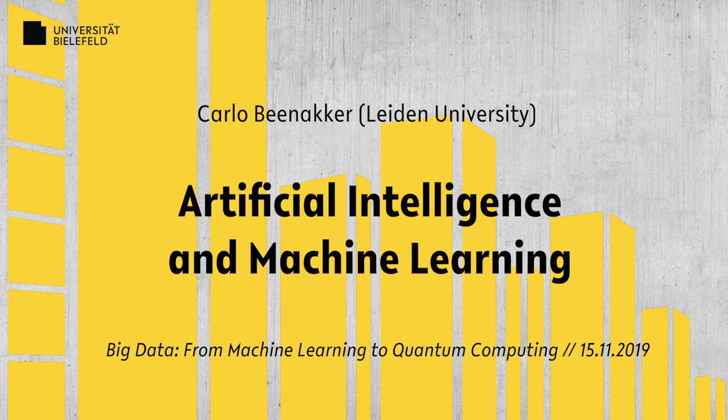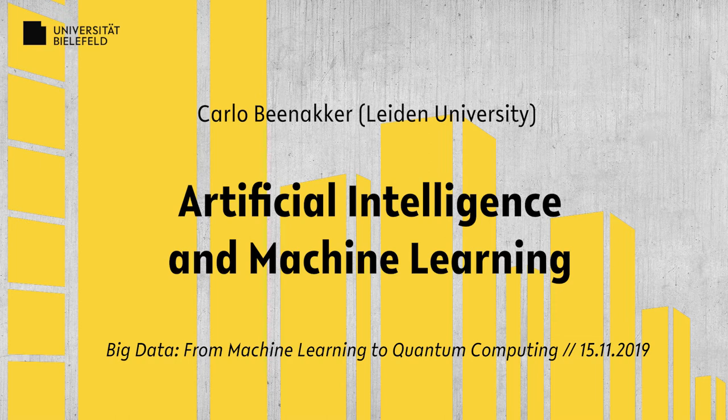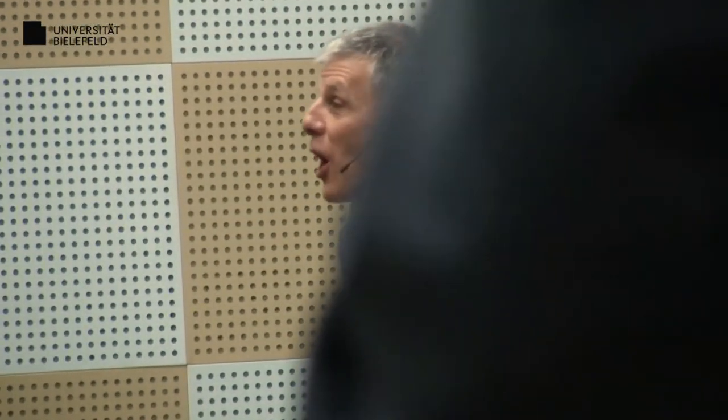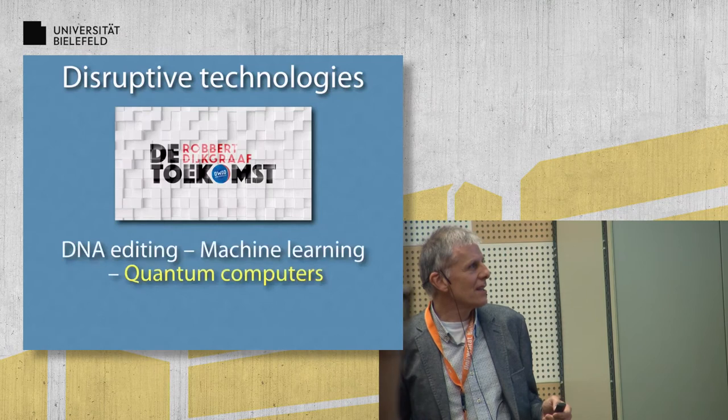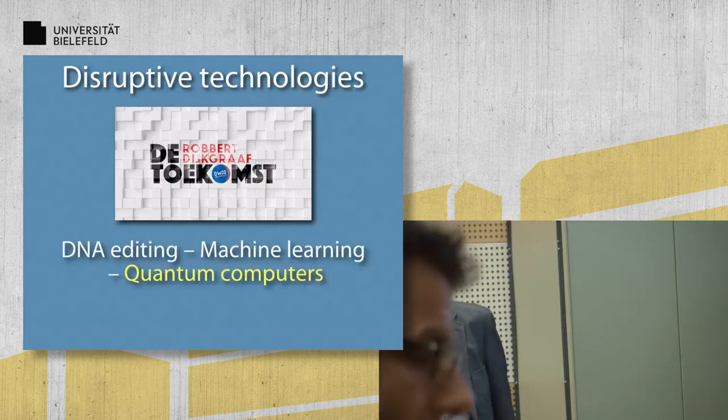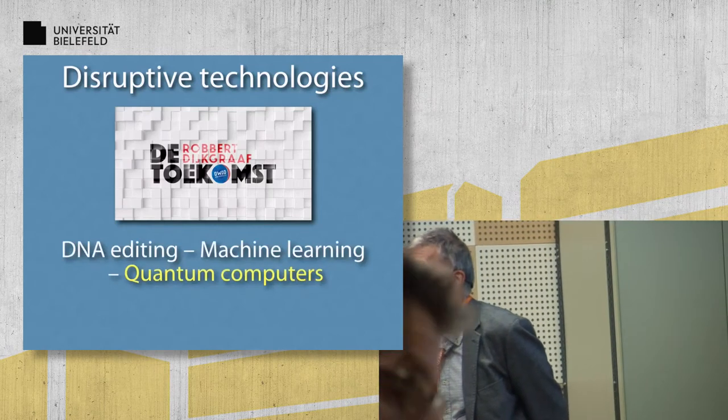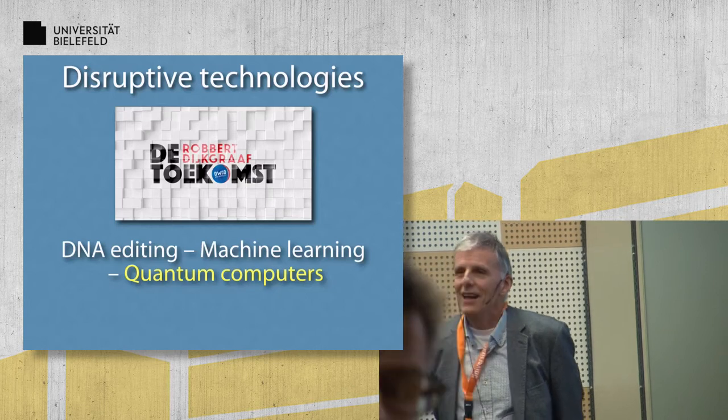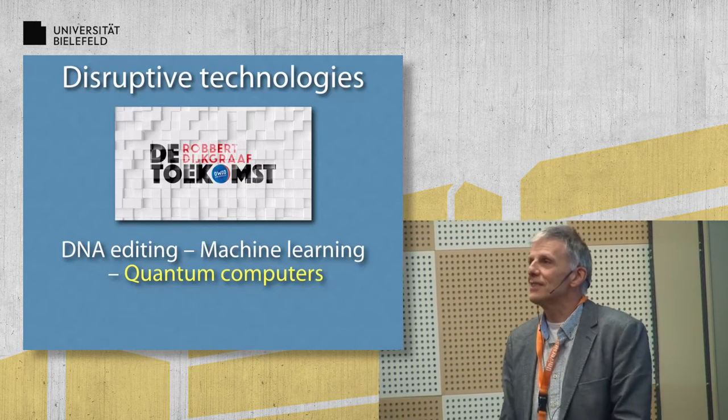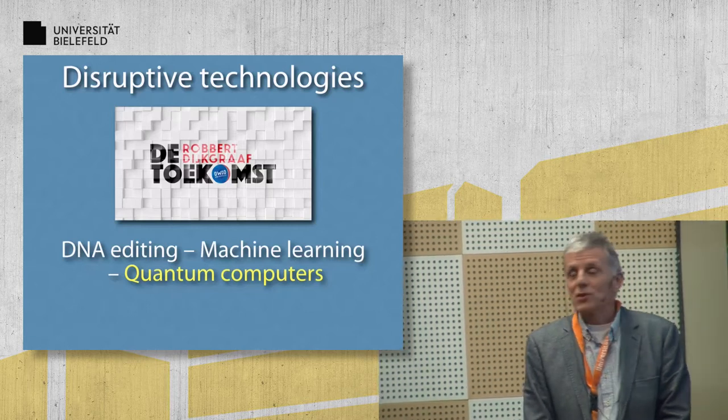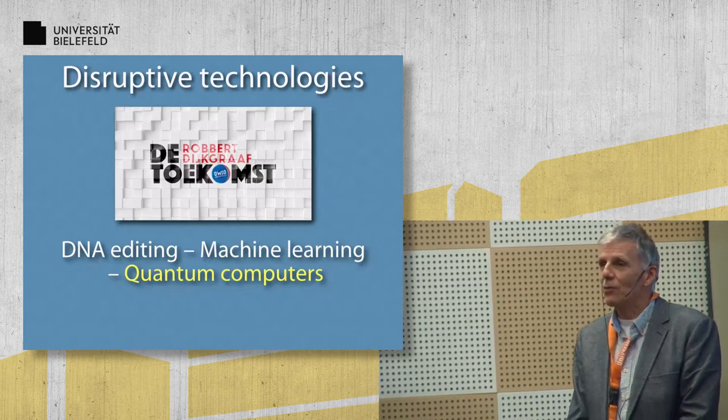I guess many of you were here yesterday when Robert Dijkgraaf discussed some disruptive technologies. He did this on Dutch national television earlier this year in a series called The Future. He mentioned three disruptive technologies: DNA editing, we heard yesterday the CRISPR methods, and then these two are really central to this session which is machine learning, artificial intelligence and quantum computers.